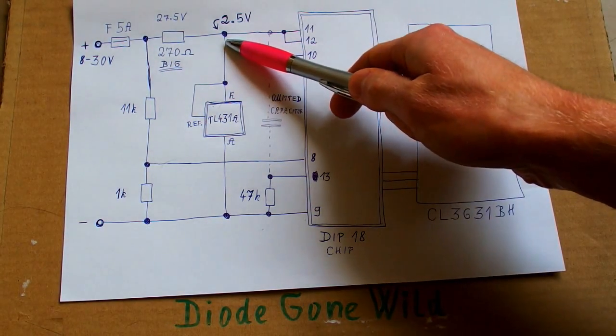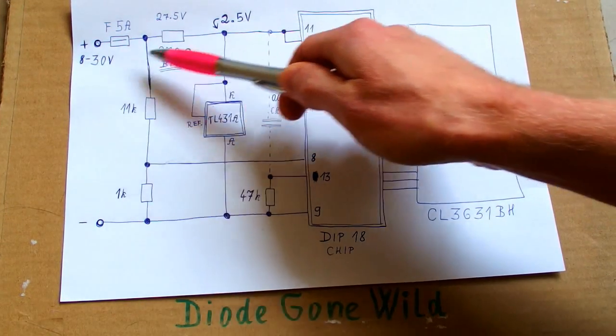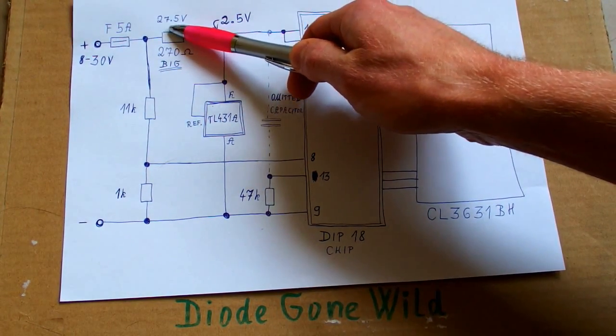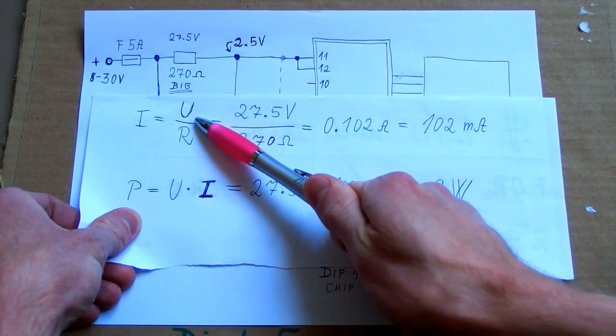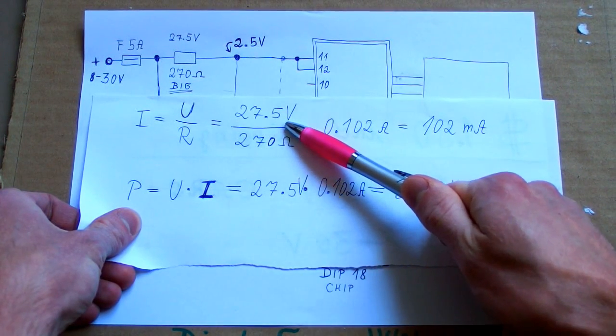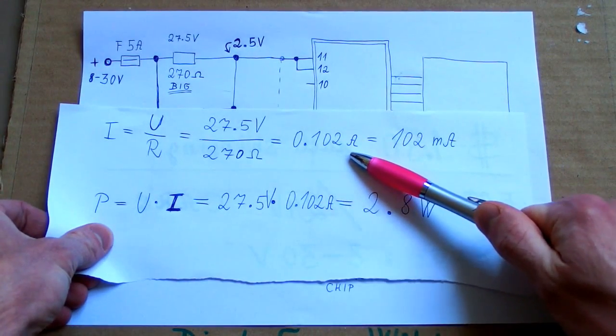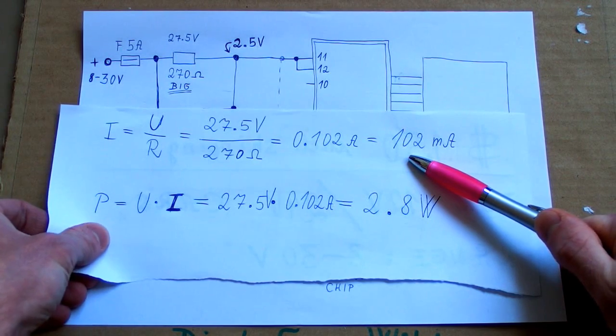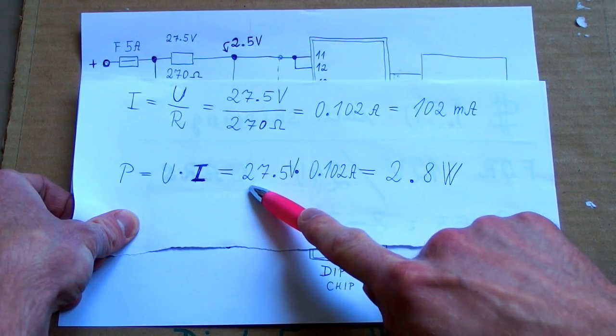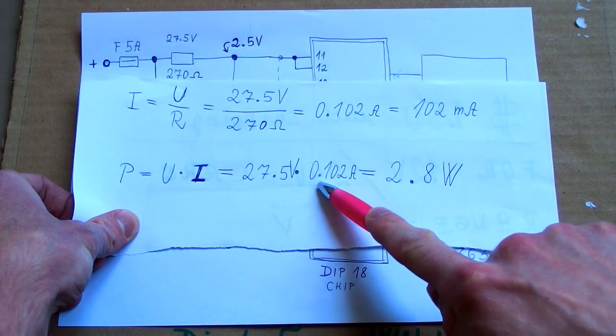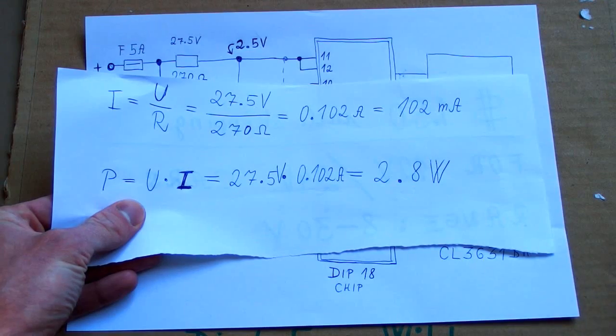So at this point there's 2.5 volts and because the supply voltage is up to 30 volts, this resistor is dropping up to 27.5 volts. In this condition the current through the resistor is I equals U over R and this is 27.5 volts divided by 270 ohms and this is 0.102 amps or 102 milliamps. The power dissipation of the resistor is P equals U times I and this is 27.5 volts times 0.102 amps and this is 2.8 watts. And that's quite a lot of power.